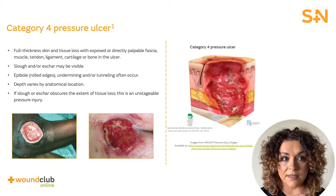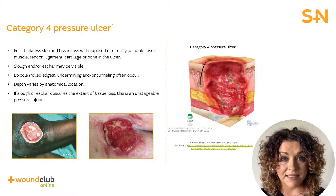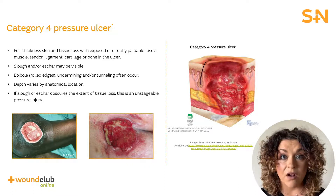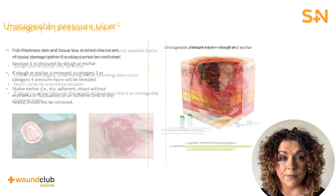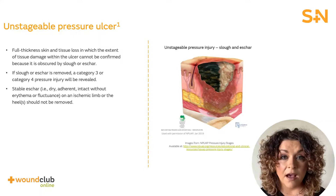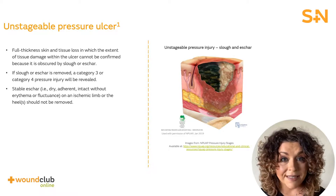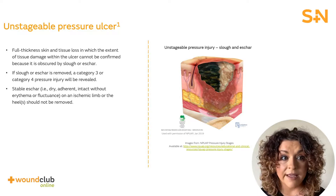Category 4 pressure ulcers are classified as full thickness skin and tissue loss with visible or exposed bone, muscle or tendon. Unstageable pressure ulcers are those with full thickness skin and tissue loss in which the extent of tissue damage cannot be fully assessed, as the presence of slough or eschar is covering the extent of tissue damage. Once the slough and eschar have been removed, the pressure ulcer can and should be classified correctly.